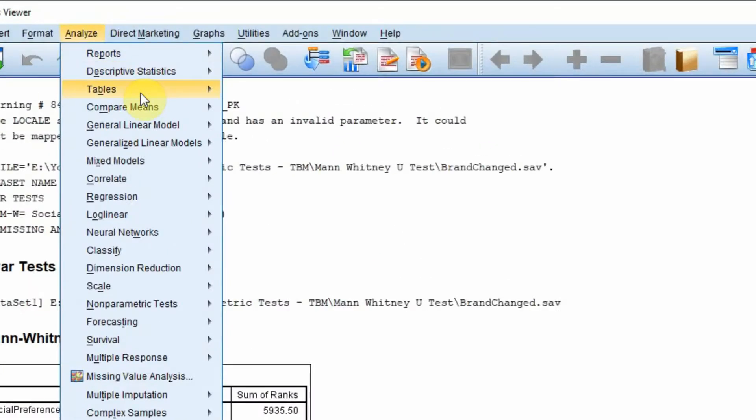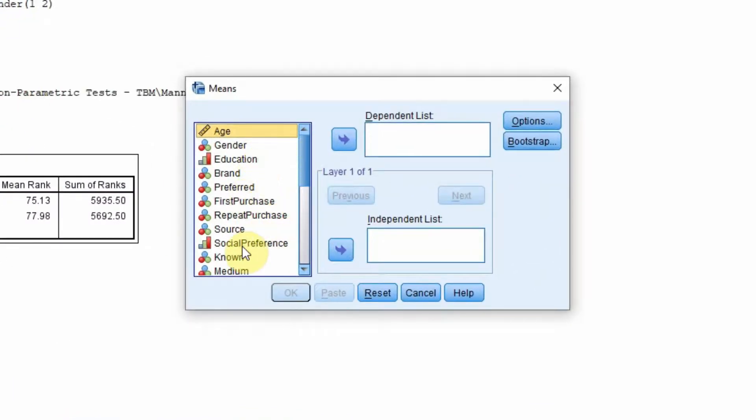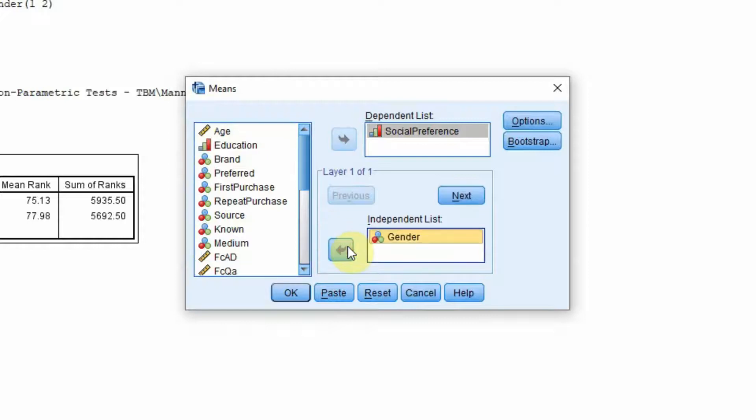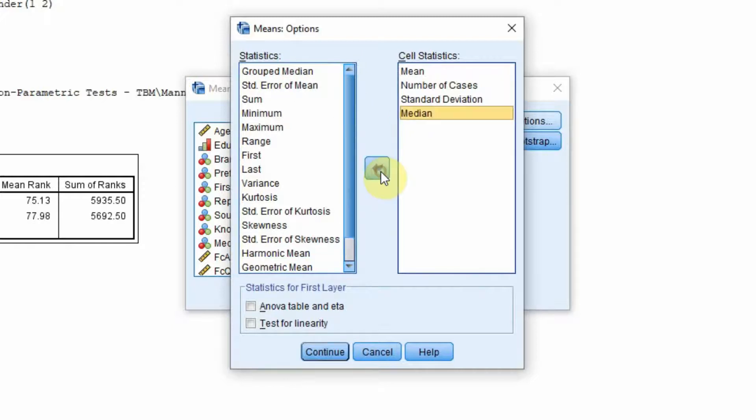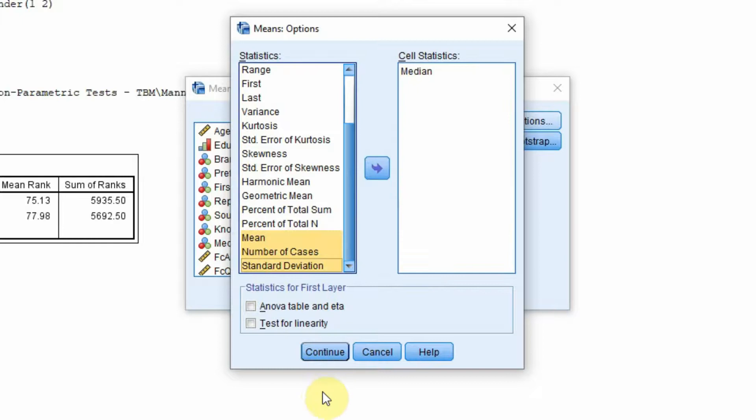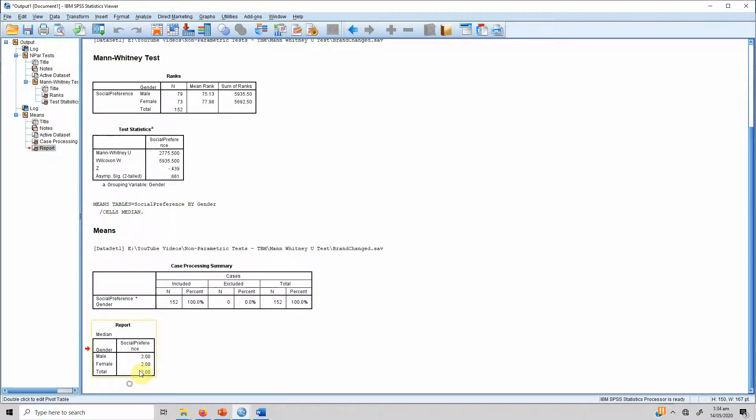In order to take out the median score, what you can do is you go to analyze, compare means, means, and you want social preference for male and female. So, you add gender to your independent list and social preference to your independent list. Go to options and here you have to select median. You can remove the rest of them if you want and press continue.